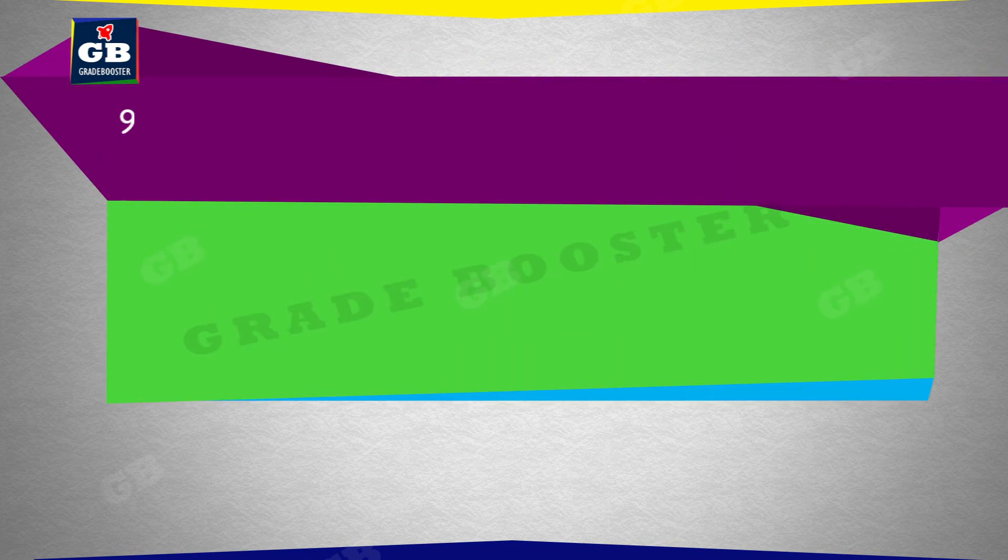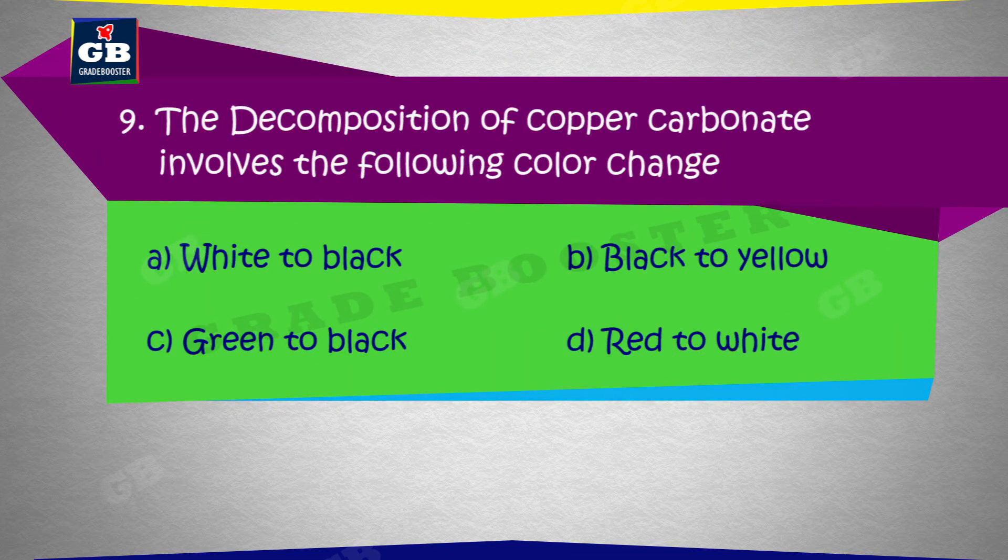The decomposition of copper carbonate involves the following color change: A. White to black, B. Black to yellow, C. Green to black, D. Red to white.